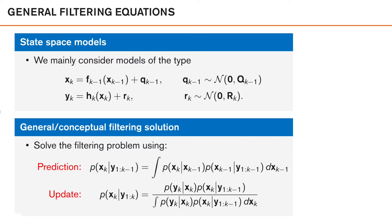If we return to our state-space models and try to generalize them from our linear models discussed previously, we mainly consider models where we have a motion model and a measurement model described by a possibly non-linear function of the state, plus some additive Gaussian noise. So fk-1 and hk here are possibly non-linear functions.